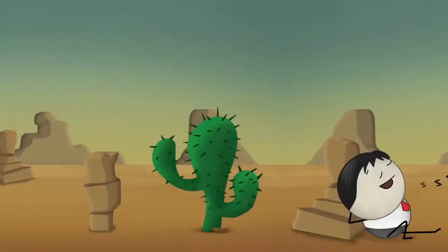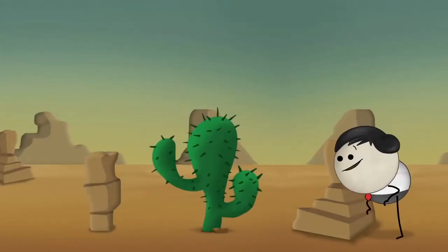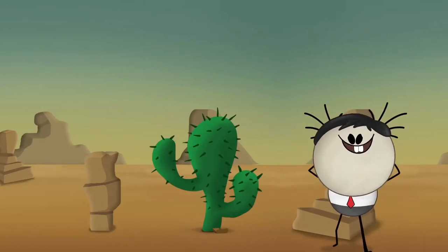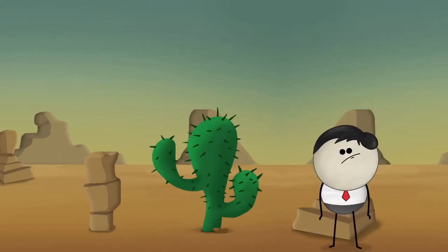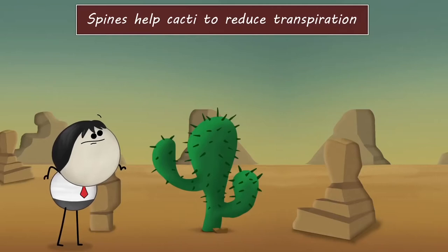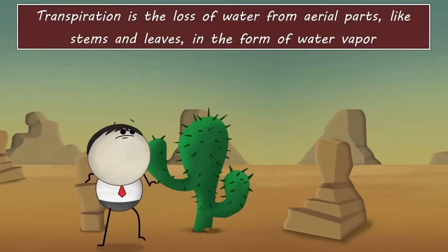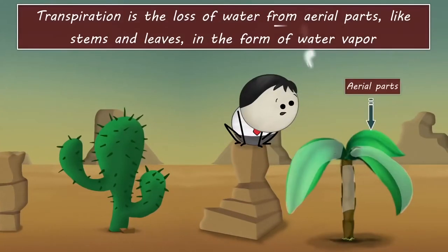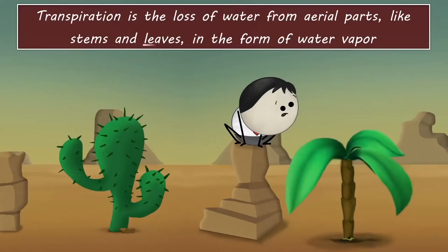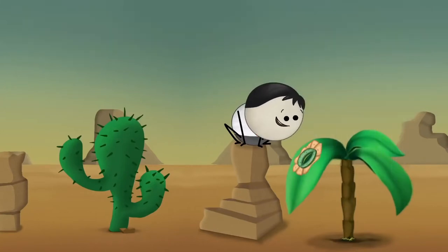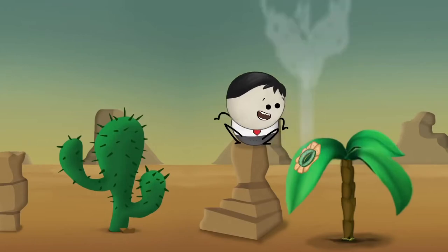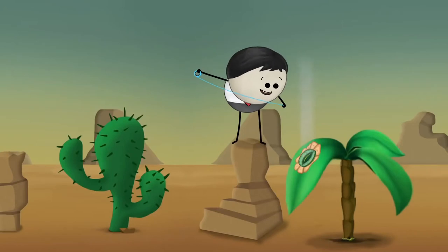Transpiration. Why do cacti have spines? Maybe they want to look like porcupines. Very funny. Spines help cacti to reduce transpiration. Well, I know all about vibration. But what's with this new thing called transpiration? Transpiration is the loss of water from aerial parts, like stems and leaves, in the form of water vapor. These aerial parts contain stomata which allow water vapor to escape into the atmosphere. So, shall we tape the aerial parts so that the vapor won't escape?